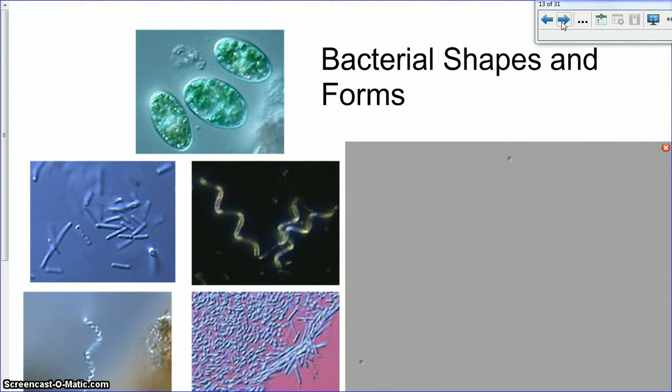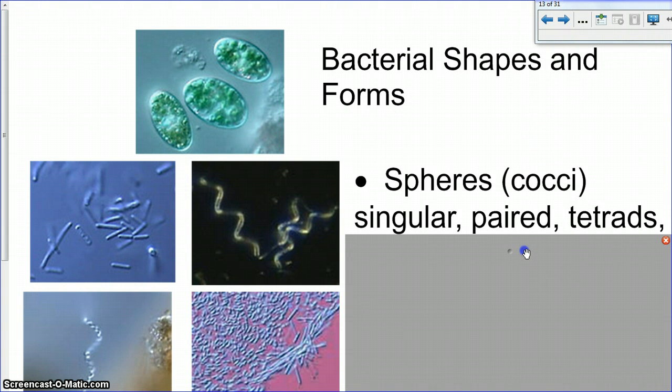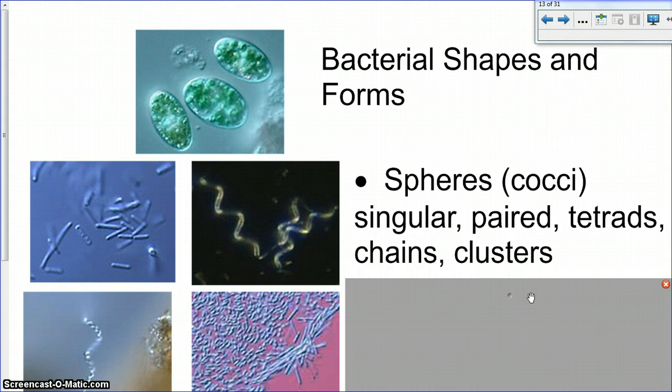So Monerans, which are bacteria, they tend to have one of three different shapes. They can either be sphere-shaped, they can be rod-shaped, or they can be spiral-shaped. So if the Monoran is sphere-shaped, usually they put cocci or coccus in the name of the bacteria. So, for example, Staphylococcus, that type of bacteria exists in small spheres. So they can either be like singular spheres, they can be paired up, they can be in groups of four, they can be in chains, or they can be in big clusters, which is what you see over here. This is a cluster of spheres. So if it's a sphere, we name it with the suffix coccus.